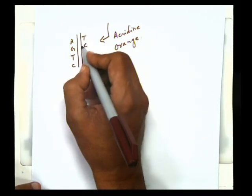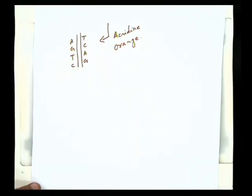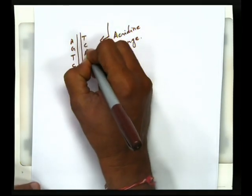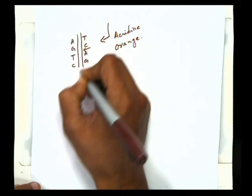What will happen? It will insert itself between two adjacent nucleotides. Suppose it intercalates over here. This is what will happen.